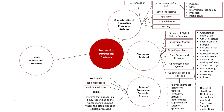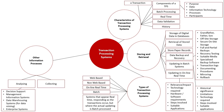The next area covers other information processes, particularly analyzing and collecting. In analyzing, we look at other systems that aid transaction processing systems, some of which are other option topics in this course: decision support systems, which aid in the decision-making process; management information systems, which help organize data and provide feedback; data warehousing systems for storing archive databases used for data mining to look for trends; and enterprise systems for managing larger businesses.